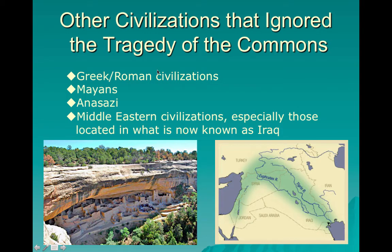Other civilizations that ignored the Tragedy of the Commons include Greek and Roman civilizations, the Mayans in the Americas, and the Anasazi — also called the Pueblo Indians — who built elaborate structures in cliff faces but had to abandon them a thousand years before North America was discovered by Europeans, due to resource mismanagement. Middle Eastern civilizations also: the cradle of civilization was between the Tigris and Euphrates in the Fertile Crescent — it's now a desert. Iraq, Iran, Syria — that entire area is no longer considered fertile.